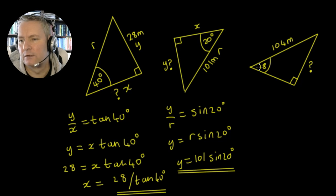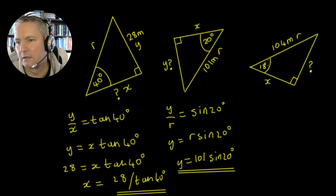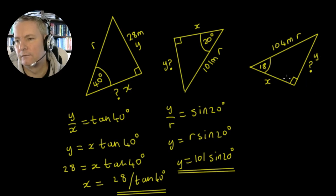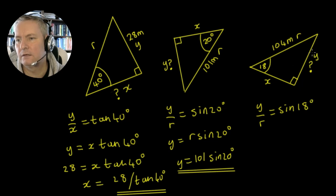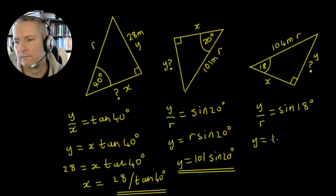Finally we can look at this one here. We know this length is our r, this is our 18 degrees, this is our x, and this is going to be a value of y. We're looking to find the y distance. We know that y divided by r is going to be the sin of 18 degrees, so y upon r is equal to the sin of 18 degrees. Therefore the y distance is going to equal 104 times the sin of 18 degrees.